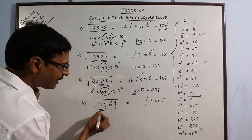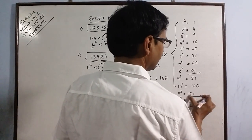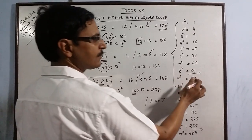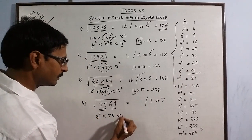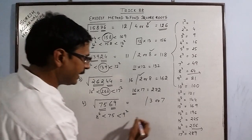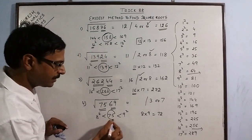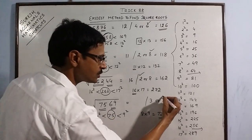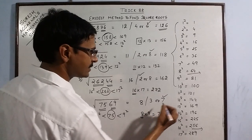Now first part is 75, and 75 lies here in between 64 and 81, that is 8 square and 9 square. Just multiply 8 and 9. So this number is 72. So take the greater number 7 and 8. So your answer is 87.